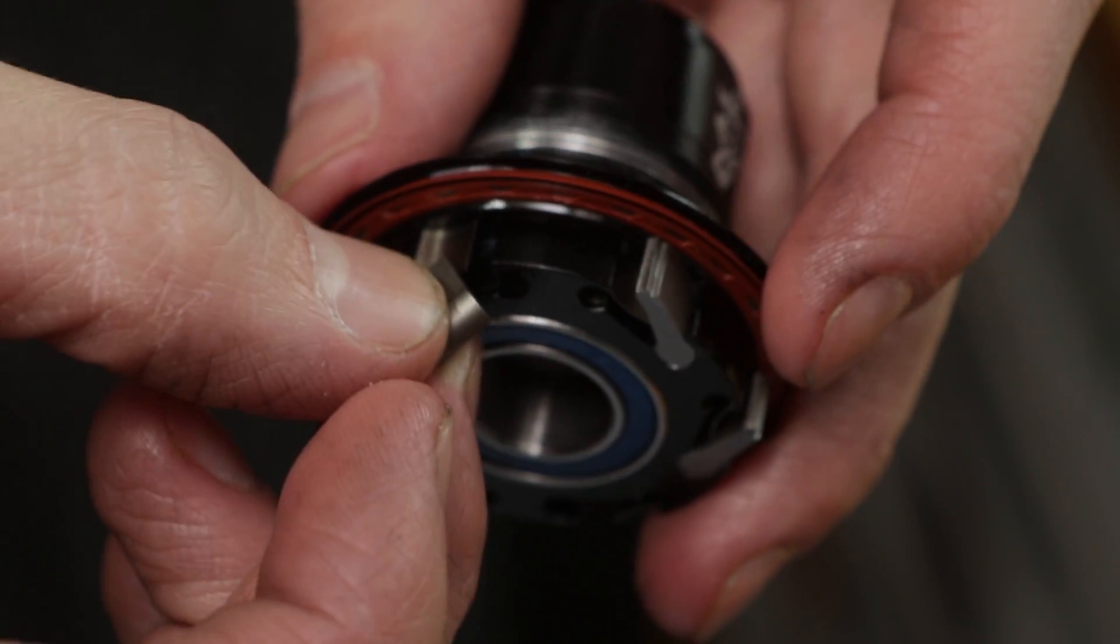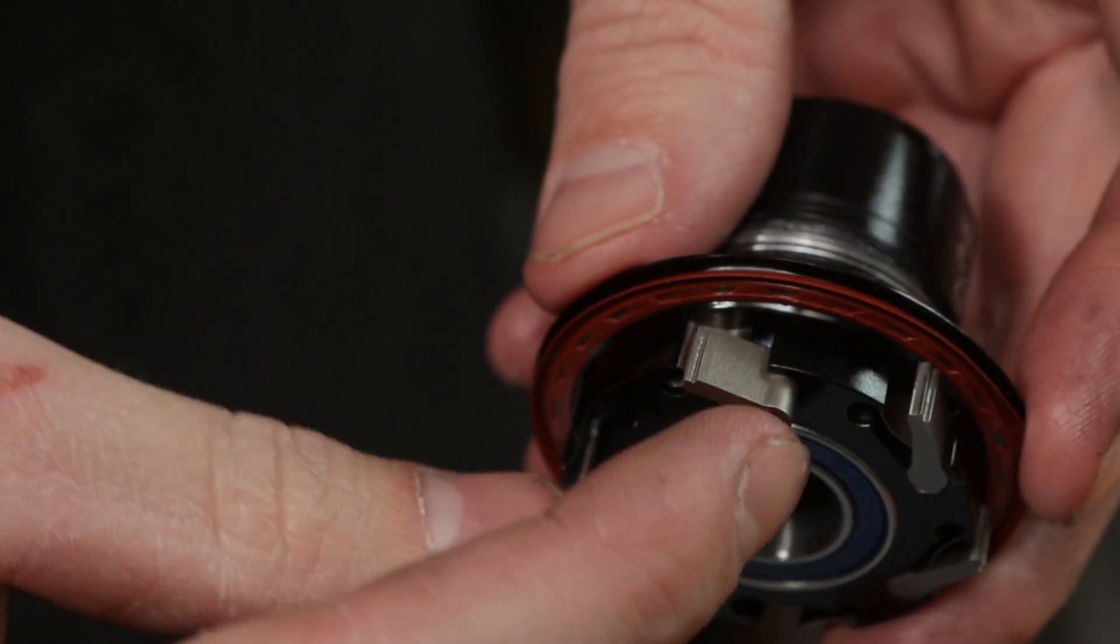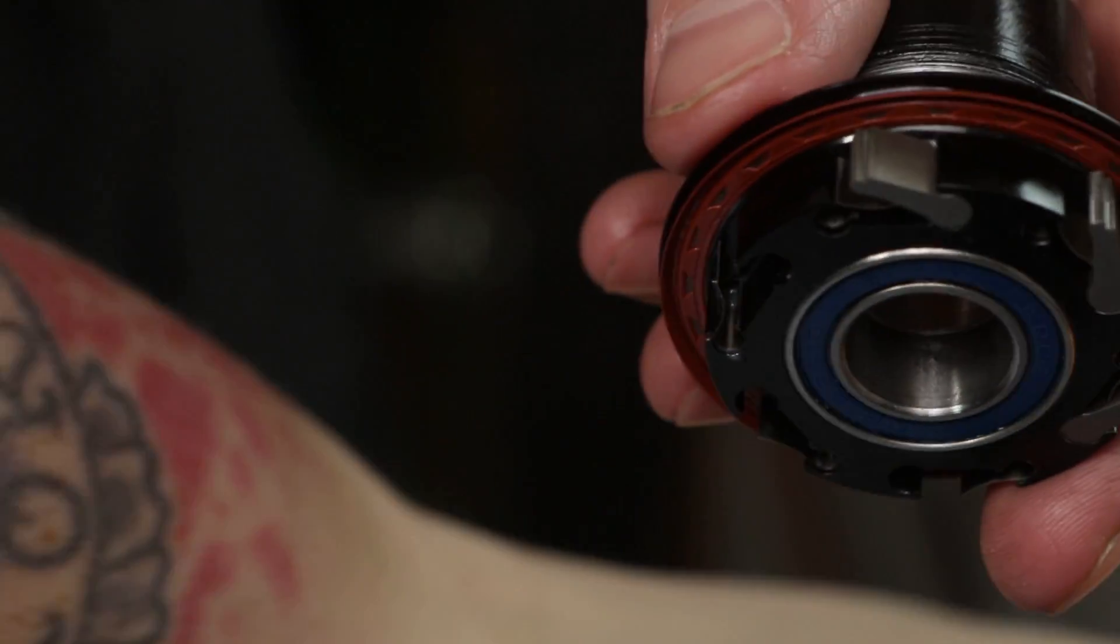Be sure you orient the pawl with the step facing out. Use the bottom edge of the pawl to depress the spring, and then rotate the ball end into position.